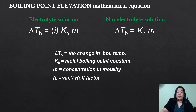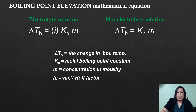Let us name the different variables in the given equation. Delta T_b is the change in boiling temperature, or the boiling point elevation. K_b is the molal boiling point constant, which is readily available at the back of any chemistry textbook — you do not need to compute it. The small letter m pertains to the concentration in molality. Then, i is the Van't Hoff factor.